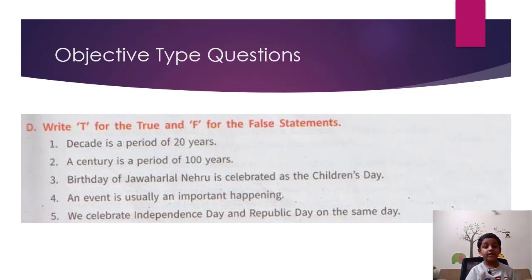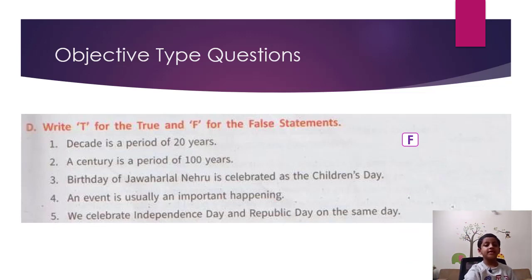D: Write T for true and F for false statements. Question 1: A decade is a period of 20 years — so the answer is False. Question 2: A century is a period of 100 years — so the answer is True.